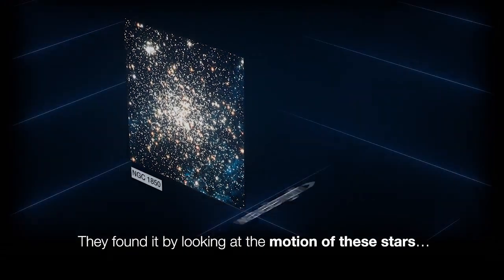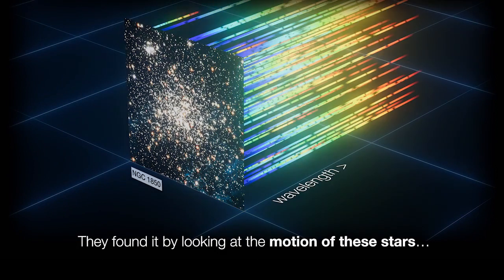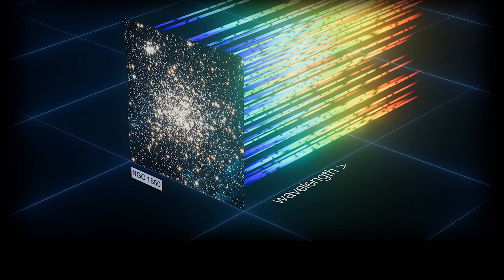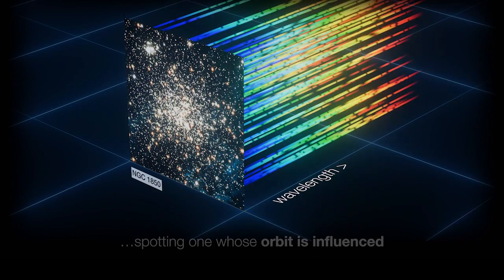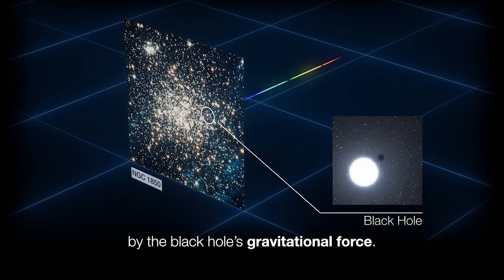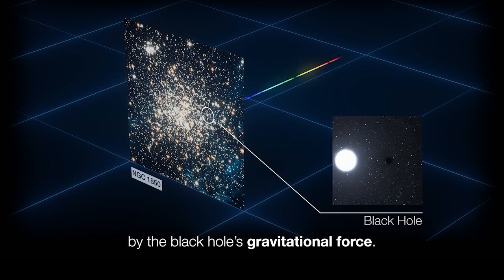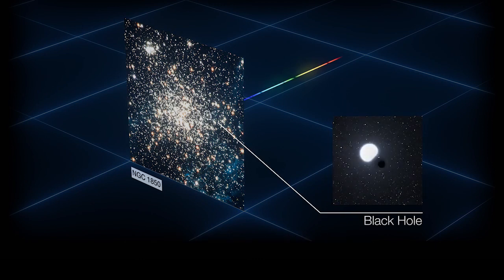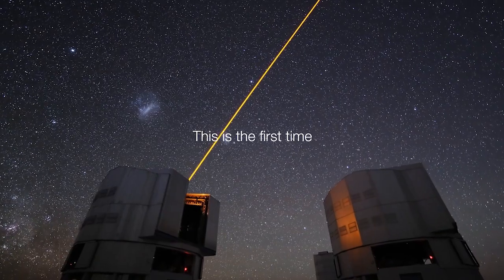The newly found black hole was spotted lurking in NGC 1850, a cluster of thousands of stars roughly 160,000 light-years away in the Large Magellanic Cloud, a neighbor galaxy of the Milky Way. It turned out to be roughly 11 times as massive as our sun.